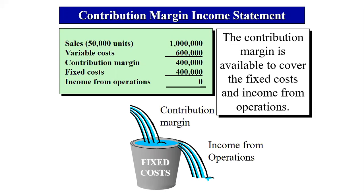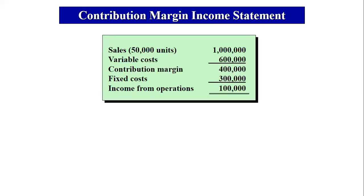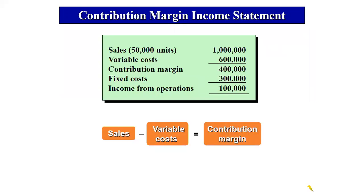If you are a cost accountant, you need to understand the contribution margin because variable cost is a controllable cost. Here is another example: fixed cost is 300,000 and contribution margin is 400,000, giving an income from operations of 100,000. When contribution margin is greater than fixed cost, the company is profitable.